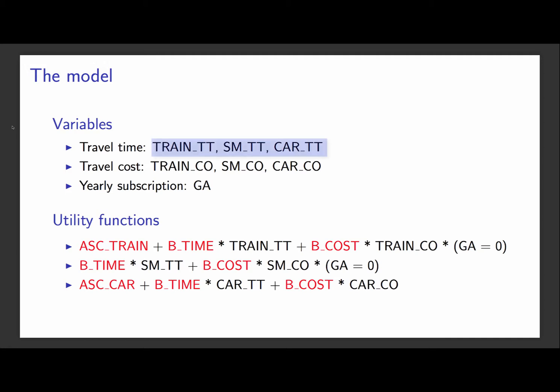The first variable is the travel time for each mode of transportation. The second variable is the travel cost for each mode of transportation. The last variable identifies individuals who own a yearly subscription for public transportation. Such travelers will not pay any cost to take public transportation because they own a yearly subscription.